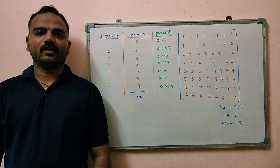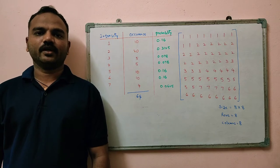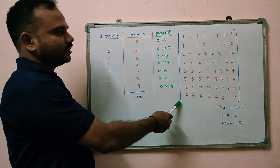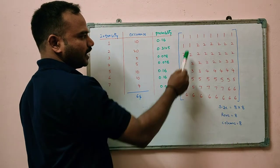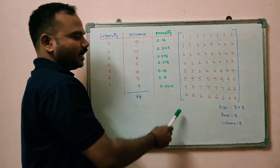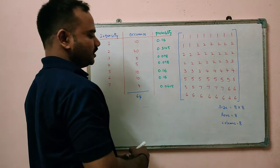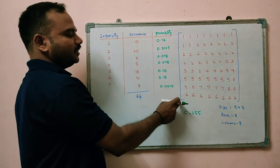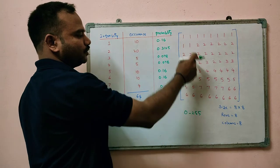Good morning and welcome to the class on digital image processing. In this class, I will explain you about histogram of an image. This is a sample image. The size of this image is 8 by 8, that is there are 8 rows and 8 columns. In this image, the intensity values considered are grayscale, so the grayscale range is from 0 to 255. And in the considered image, we have intensity values ranging from 1 to 6.